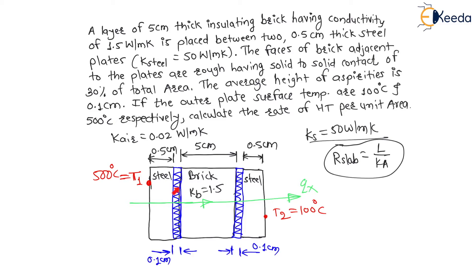The resistance of brick and resistance of air are in parallel. For brick, only 30% of area applies, and for air, 70% of area applies. Then there is the full brick resistance R4 in the middle. The same parallel combination of brick and air appears again on the other side, followed by another steel plate resistance.